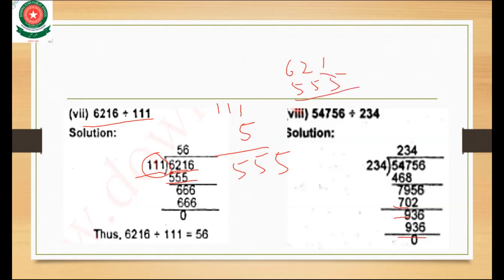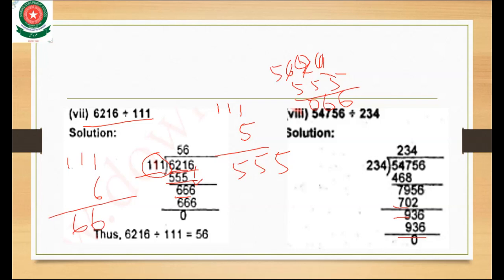We can't subtract 1 with 5, so we take a carry. This makes 11 minus 5 is 6. Taking another carry, 11 minus 5 is 6 again, and 5 minus 5 is 0. So we get 66. We bring down the last digit 6, making 666. 111 times 6 is 666. So 666 minus 666 is 0. The answer is 146.